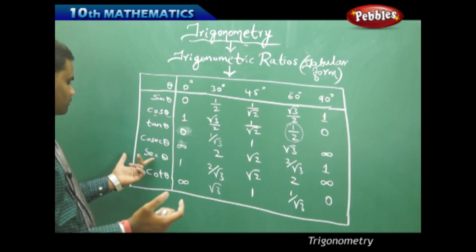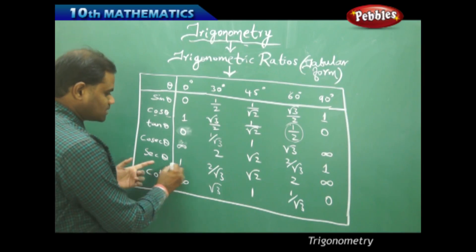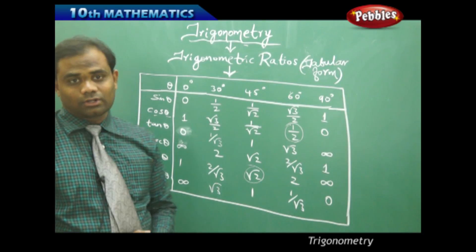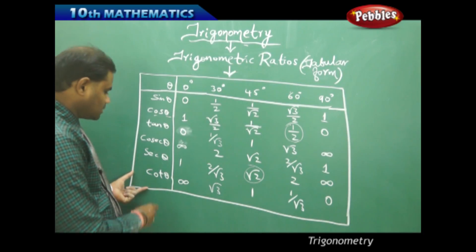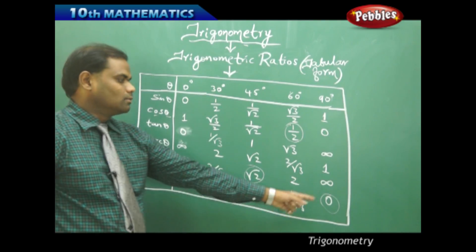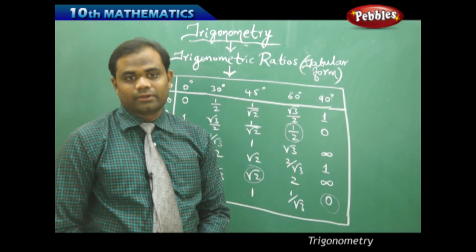And say I wanted to find secant 45, I go to the column of secant and I go to 45 and I get root 2. Finally cot 90, I go to cot and then to 90 - cot 90 is 0. This is how I intersect between finding the ratios.